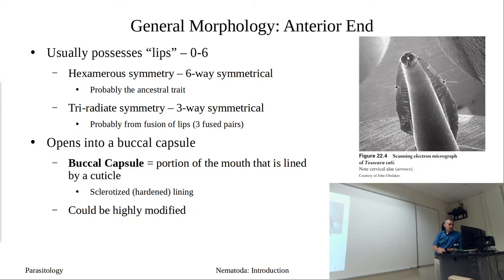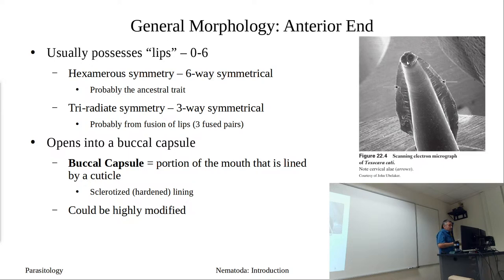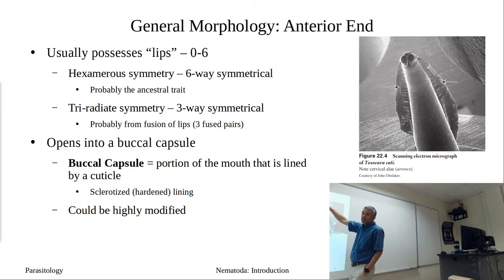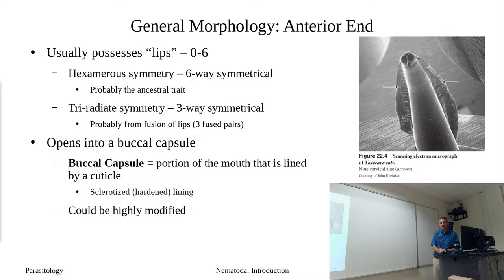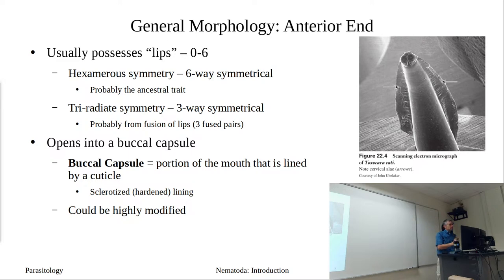These lips open into a buccal capsule. The mouth is the opening itself, which leads into the buccal capsule — a portion lined by cuticle that can be sclerotized or hardened. The cuticle is on the outside of the worm and also goes into the buccal capsule and into the foregut — the pharyngeal bulb and so forth. The buccal capsule can be highly modified for attachment or feeding purposes.